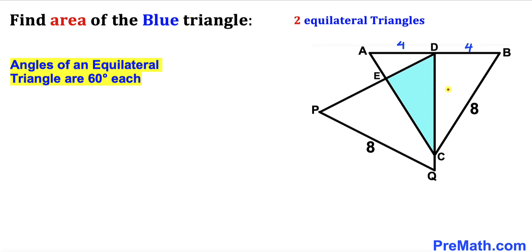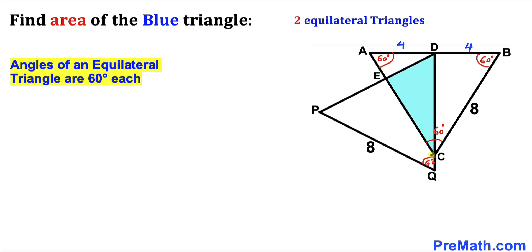Both of these triangles are equilateral triangles. Keep in mind that the angles of an equilateral triangle are 60 degrees each, so therefore all these angles are 60 degrees each across the board.